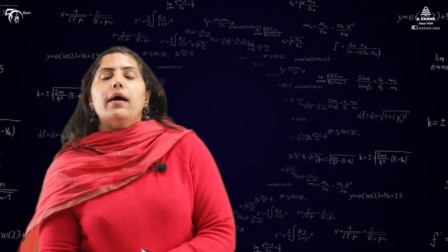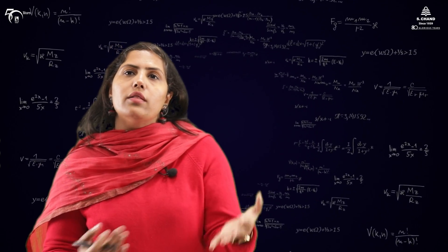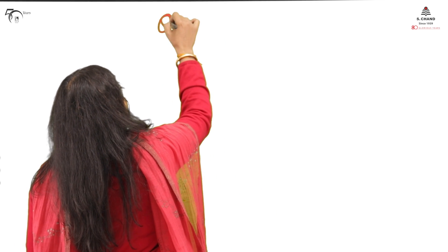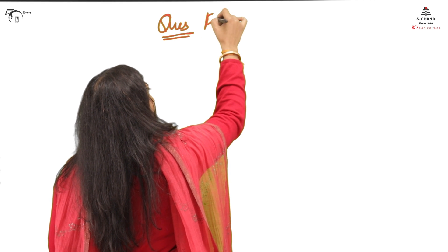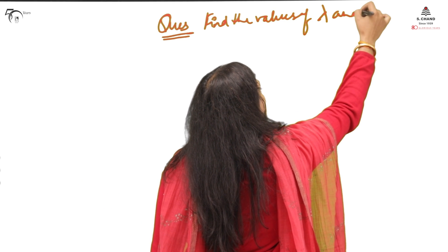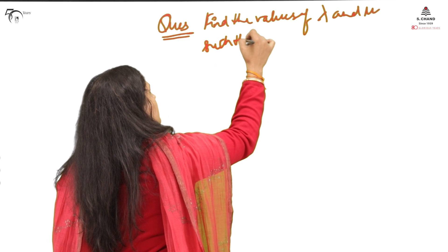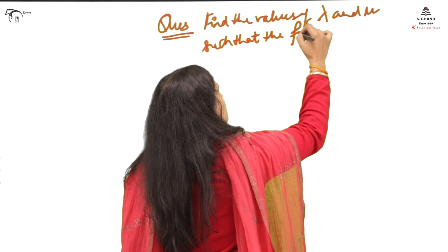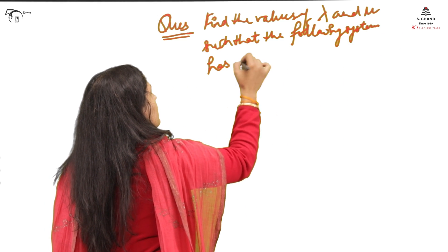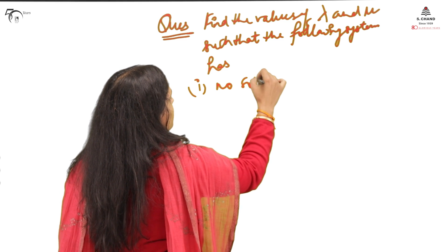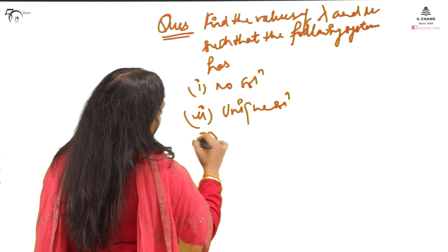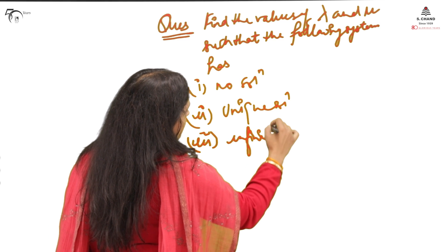In part one of this lecture we discussed the conditions where a system has a unique solution, and in what situations a system will have infinitely many solutions and no solution. Now I am taking one example in which you will see all three conditions discussed in one question. The question is: find the values of lambda and mu such that the following system has (1) no solution, (2) unique solution, (3) infinitely many solutions.